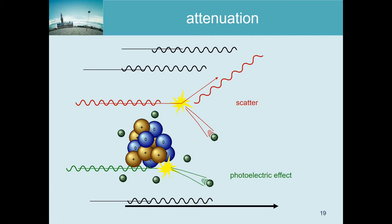Nuclear medicine people distinguish between attenuation and scatter, but when that interaction happens in human tissue, water, or phantoms, it is almost always exactly the same physical effect - Compton scatter - causing both.